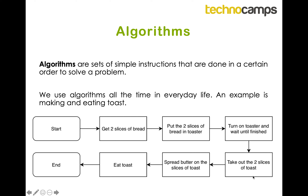It depends on the individual and the context. An algorithm is plainly a set of instructions used to solve a problem. For example, making a cup of tea — there are ten ways of making a cup of tea. There is even an ISO standard for making a cup of tea, which may not give you your preferred type but it will give you a tea. So algorithms are very specific to a particular problem and how you want it solved.